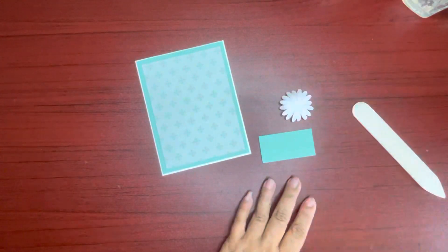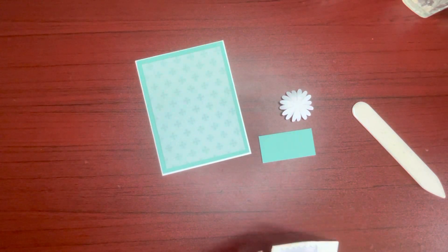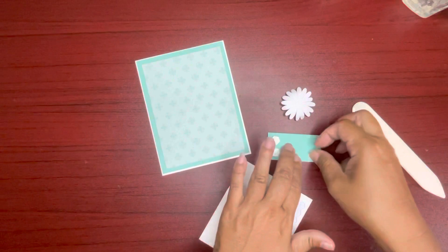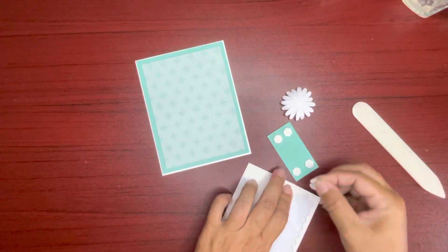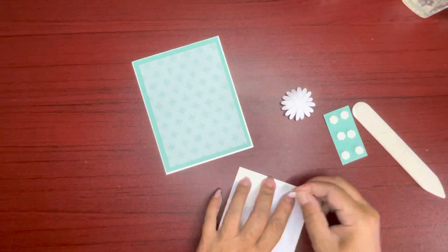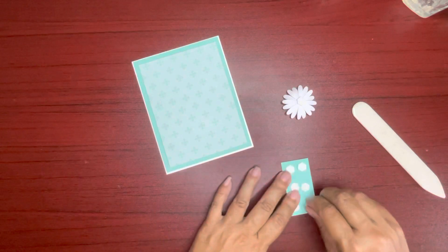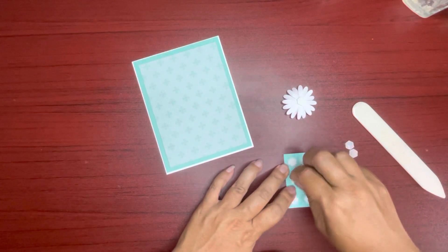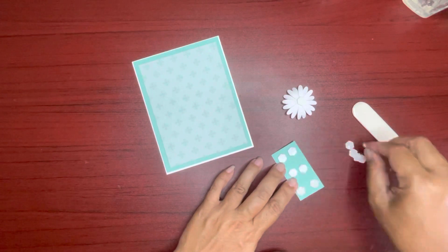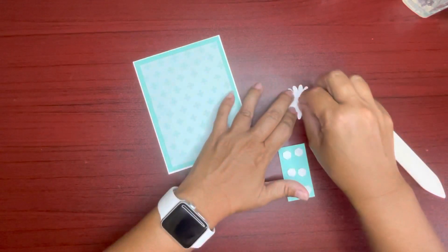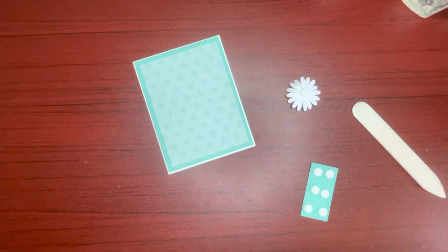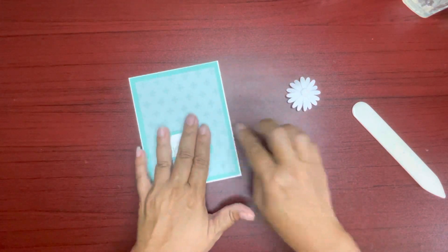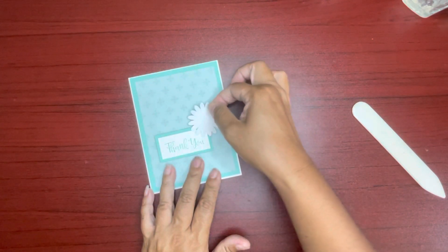And then getting some Stampin' Dimensionals. Loading them up. Placing this here, more towards the left, because I wanted to put the daisy right up here. Just like this at the corner.